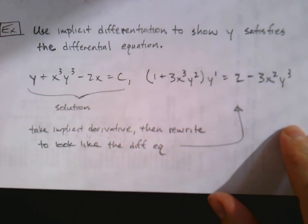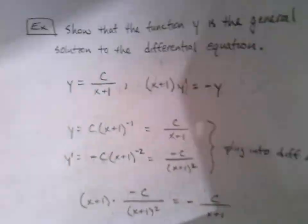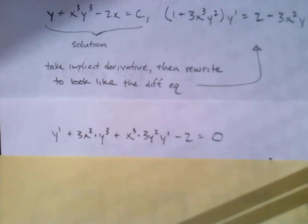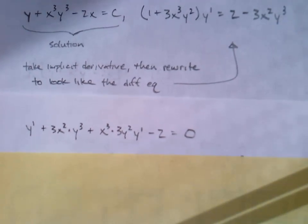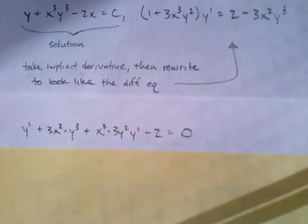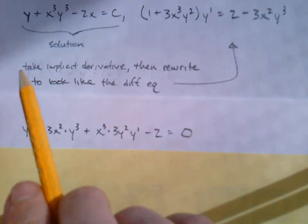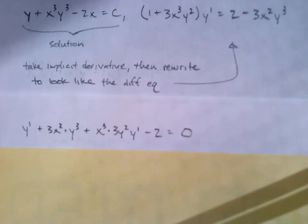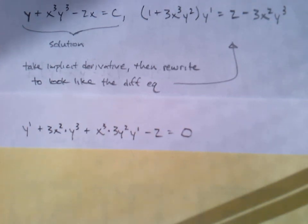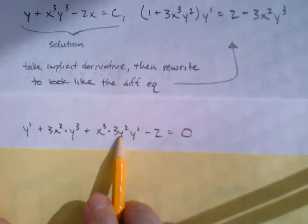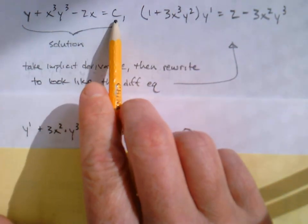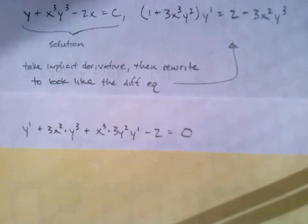Let's continue on the next page. Taking the implicit derivative: the derivative of Y is Y prime. For x-cubed times Y-cubed we use the product rule, giving three x-squared times Y-cubed plus x-cubed times three Y-squared times Y prime. The derivative of minus 2x is minus 2, and the derivative of C, since it's an arbitrary constant, is zero.